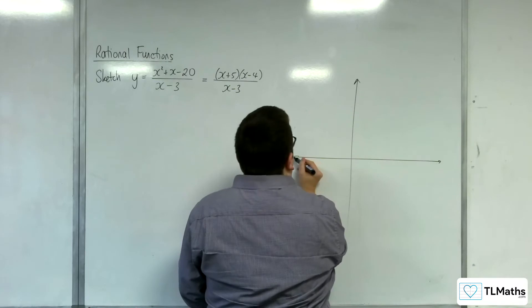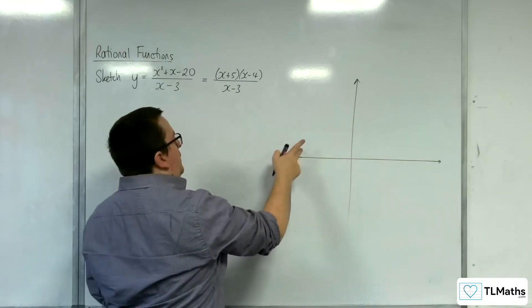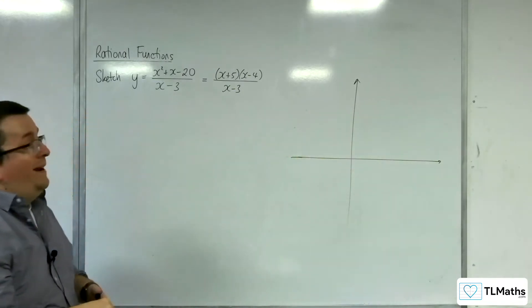Vertical asymptotes first. That will be when the denominator is 0, so that will be at x equals 3.